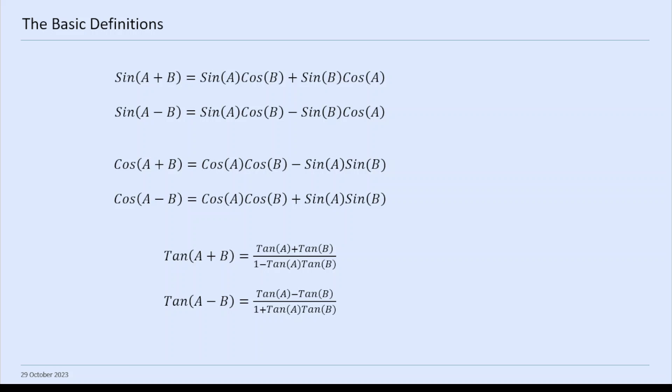Then we've got some for tan as well. Tan A plus B equals tan A plus tan B divided by 1 minus tan A tan B. And then you've got the one for tan A minus B below that.